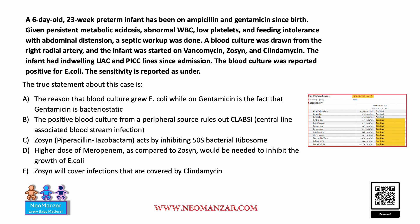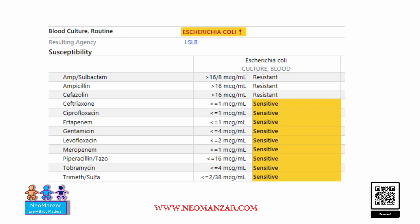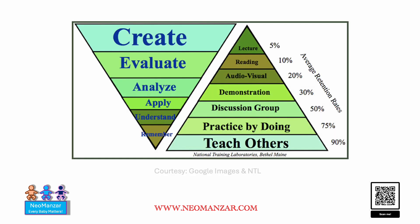In the next slide you will see the ID and sensitivity picture. There are five options given — what do you think is the right choice? You can pause and think. This is the culture report and sensitivity report — pause and think.